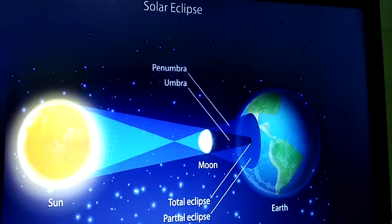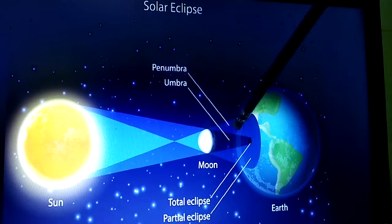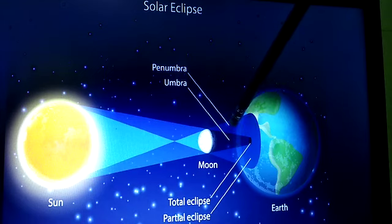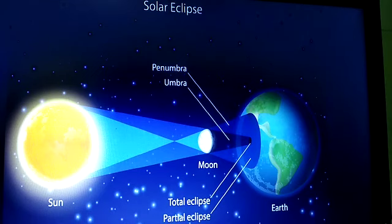It is called the total solar eclipse because the Moon hides the Sun completely or totally. At the same time, as you can see, there are two other parts besides the Moon's shadow having only a part of the Sun's light. This part is known as the partial solar eclipse or Penumbra. The Penumbra is the faint outer shadow area in which the partial solar eclipse appears.